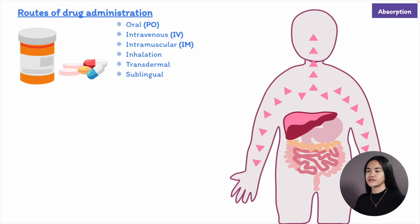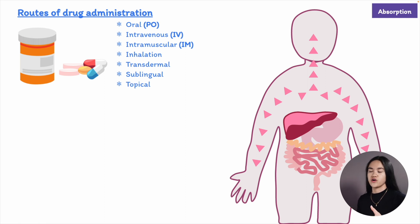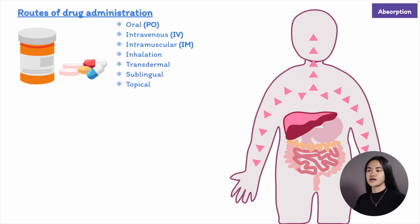Other routes include sublingually — placing a drug under the tongue, which is absorbed quite rapidly. There are also drugs administered via the eye, ear, and nose; most of these are delivered locally and are not absorbed systemically into the greater body.